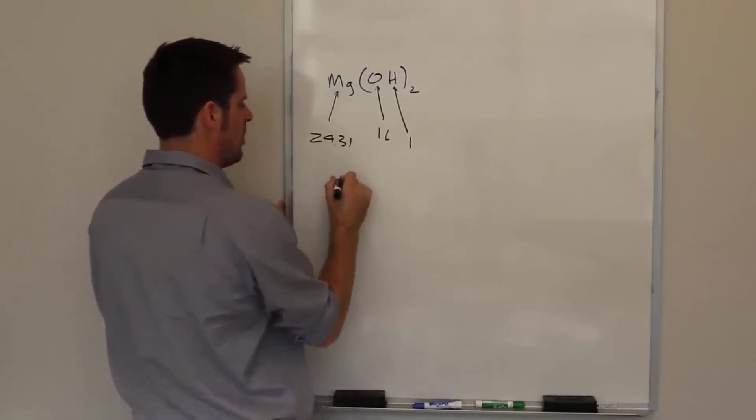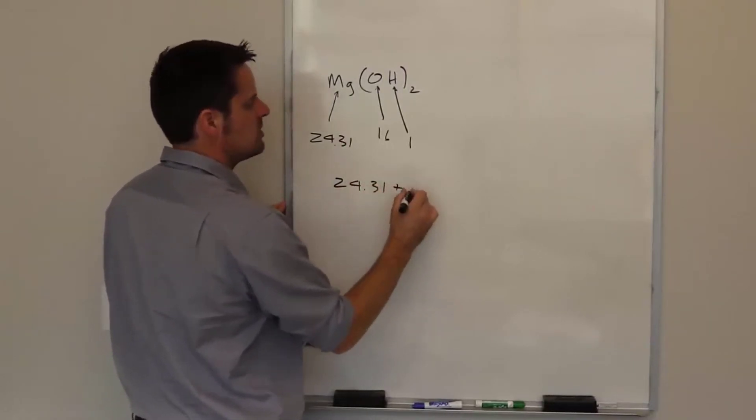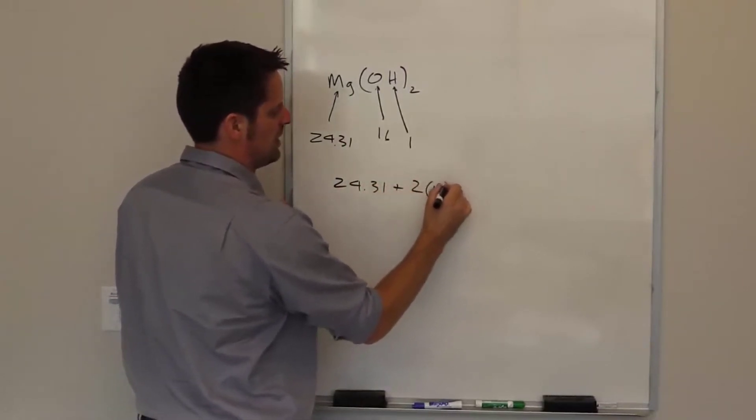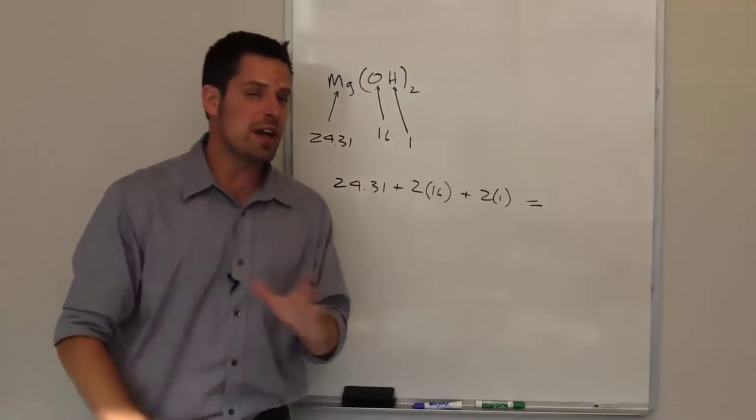So what I've got is one magnesium with an atomic mass of 24.31 plus two atoms of oxygen each weigh 16 plus two atoms of hydrogen that each weigh 1. I'll let you do that on your calculator.